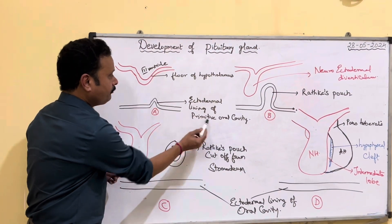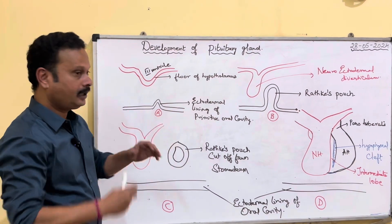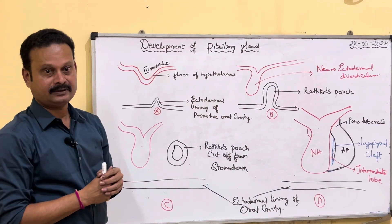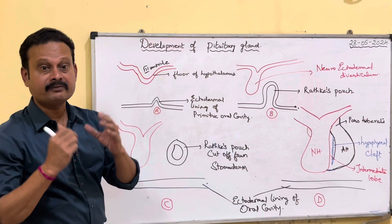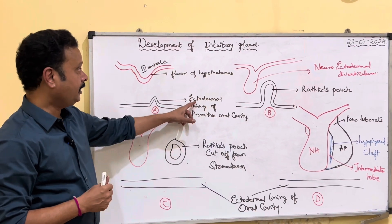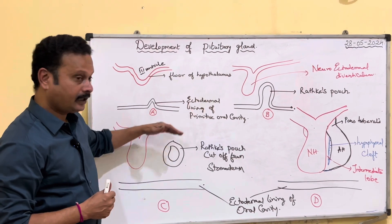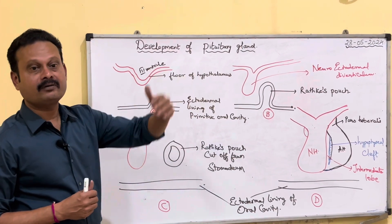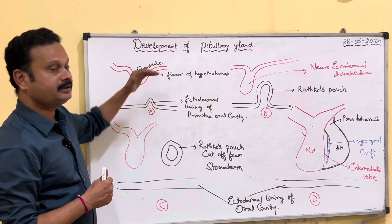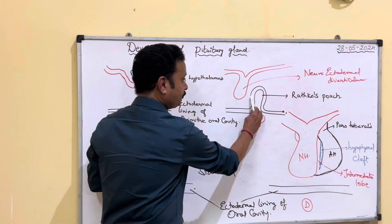From the floor of the primitive oral cavity, an ectodermal evagination occurs in the third week of intrauterine life. This ectodermal evagination lining the floor of the primitive oral cavity evaginates and eventually grows bigger.